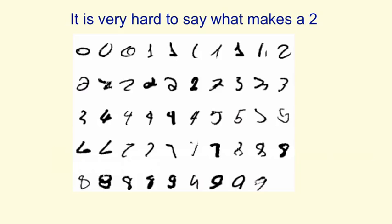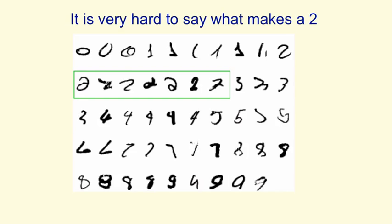If you look at a bunch of twos, like the ones in the green rectangle, you can see that if you knew they were handwritten digits you'd probably guess they were twos. But it's very hard to say what it is that makes them twos — there's nothing simple that they all have in common. If you try to overlay one on another, even if you skew it a bit, it's very hard to make them overlay. So a template isn't going to do the job. In particular, a template would be very hard to find that fits those twos in the green box and won't also fit the things in the red boxes. That's one thing that makes recognizing handwritten digits a good task for machine learning.